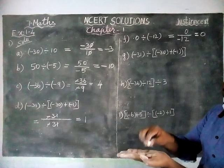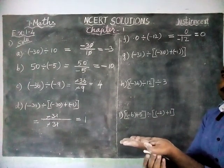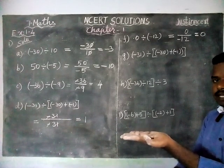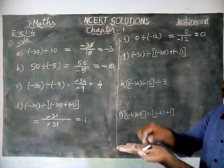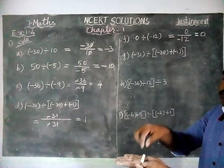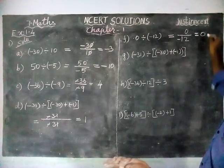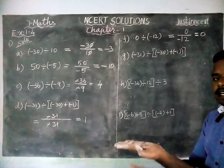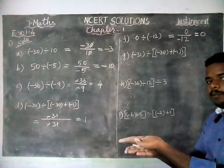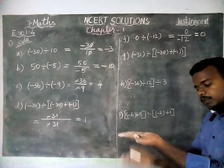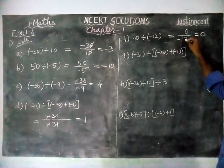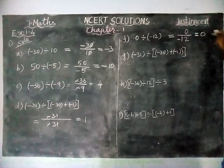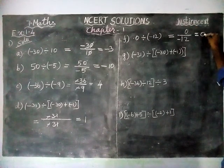But when 0 is coming in the denominator, we cannot keep this object on the table — it will come down. So this is not possible. This is a common rule: when we are having 0 in the numerator, we will get 0 as the answer. When we are having 0 in the denominator, that is not possible — the object will not stand, it will come down. So this is not possible. When 0 is coming in the denominator, it is not defined — still now, no one has found the answer. So that is not defined. When 0 is coming in the numerator, we are getting 0.